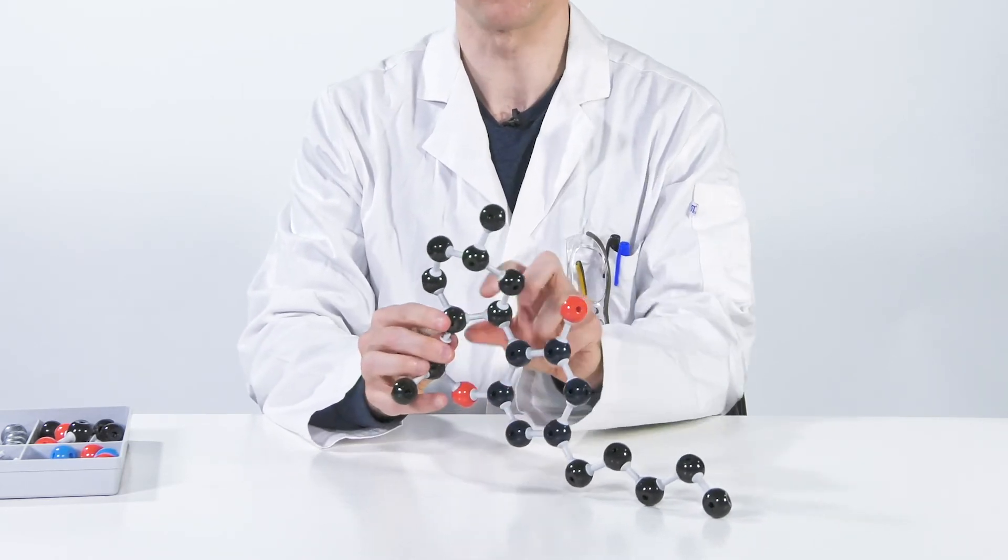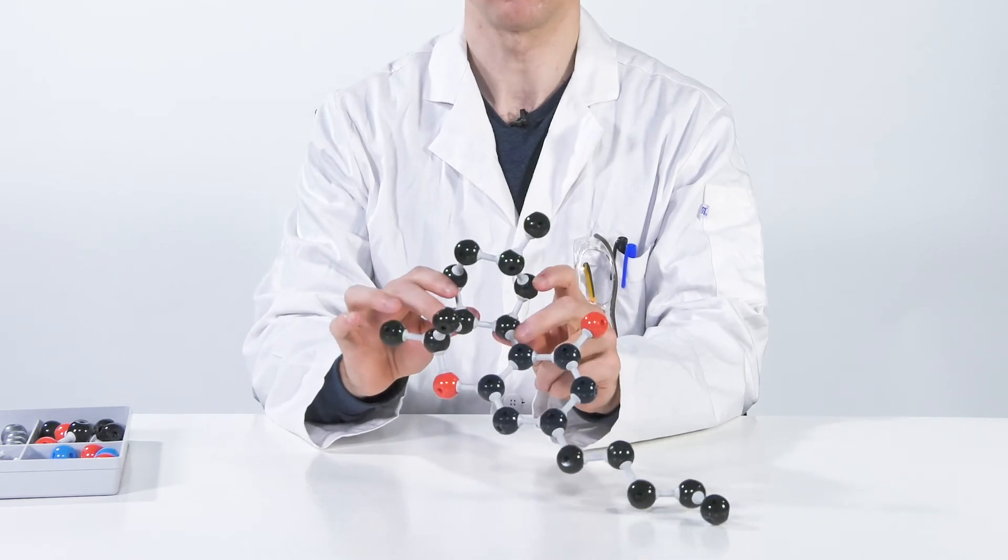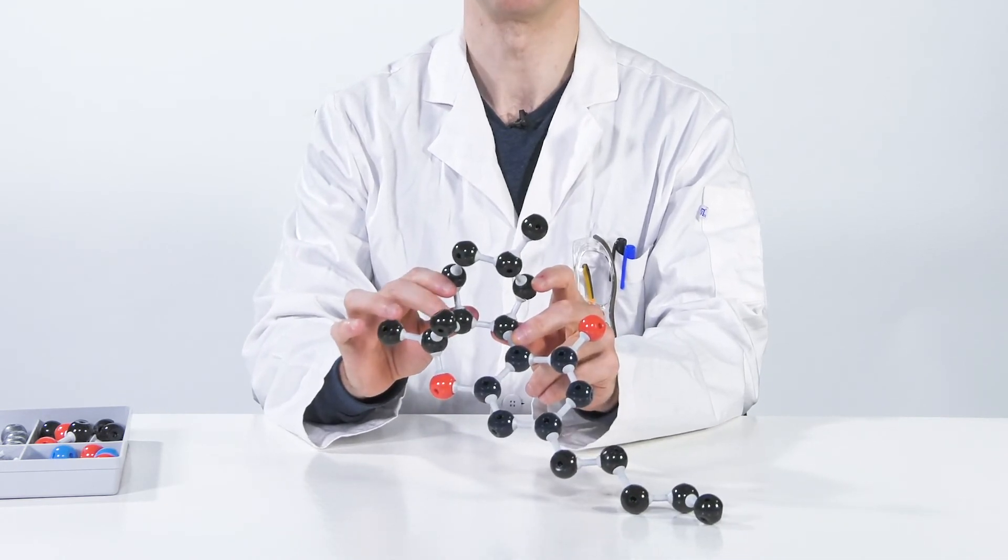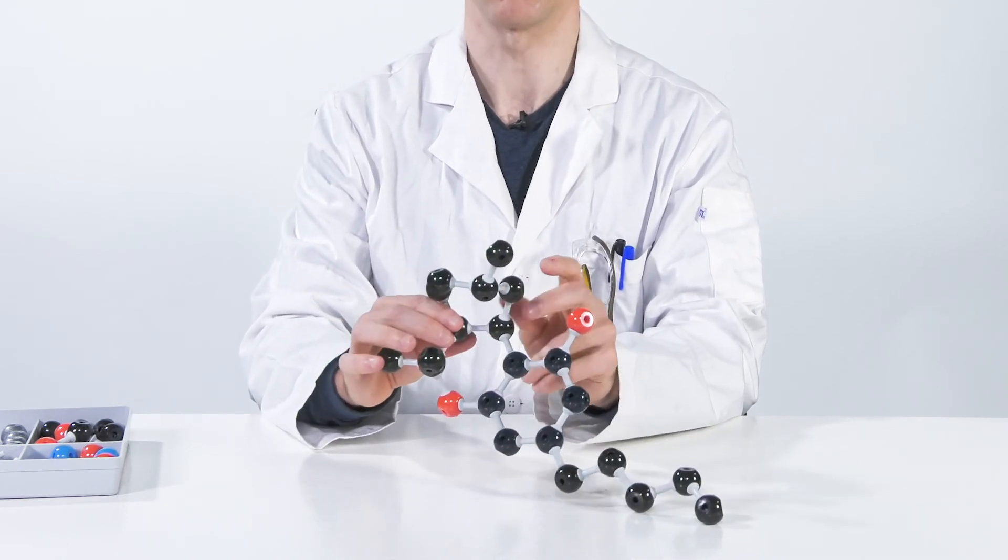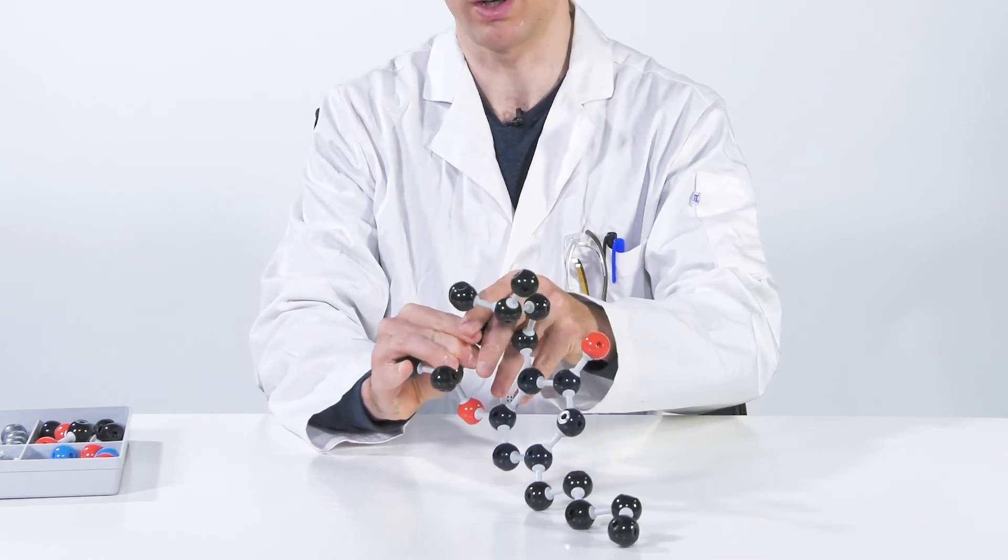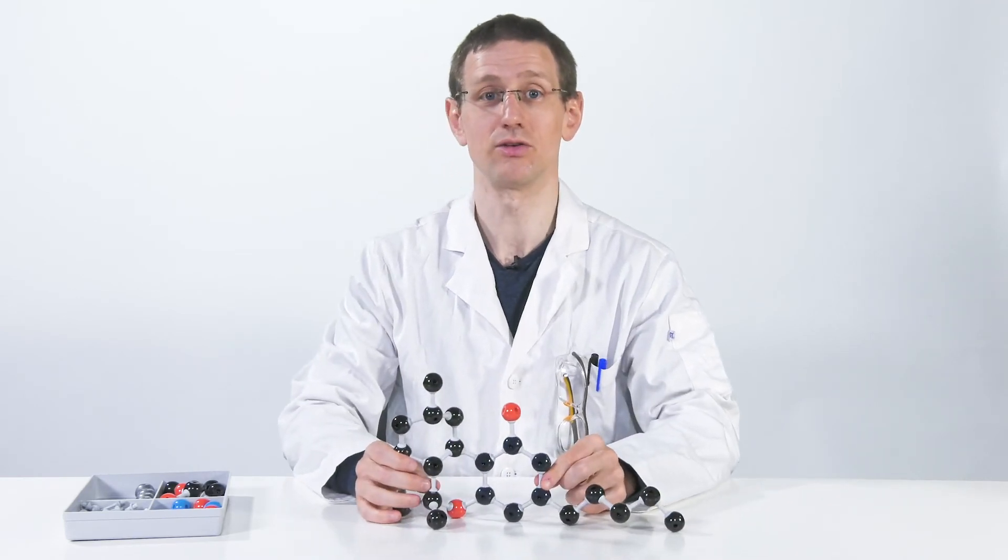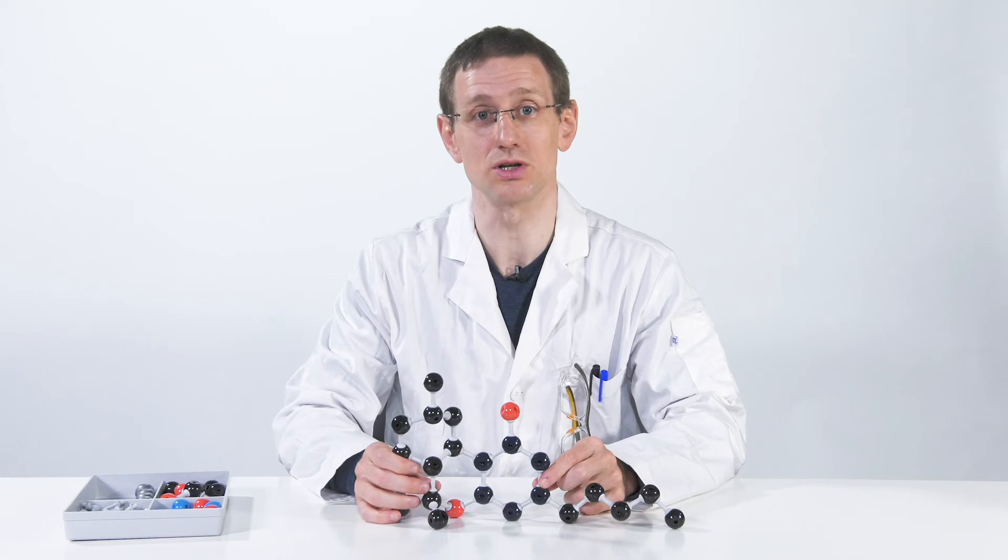So if I just remove this bond, turn this, stick this in here, now this is on the same side, so it's cis. But this is more strained. So naturally occurring, we get this trans. Let me just pull this back out. So this is the trans. So this is my short explanation of where THC comes from and how it looks. Thank you for watching.